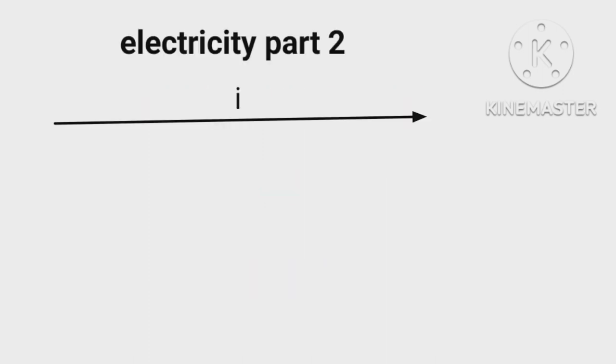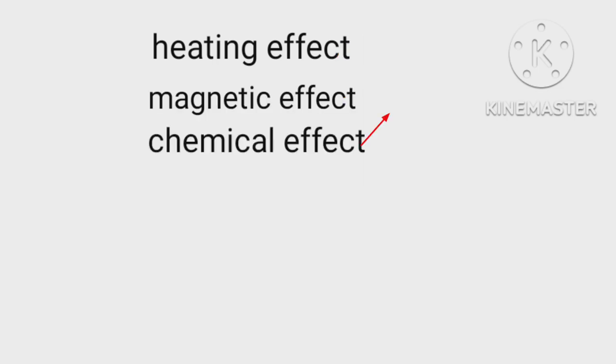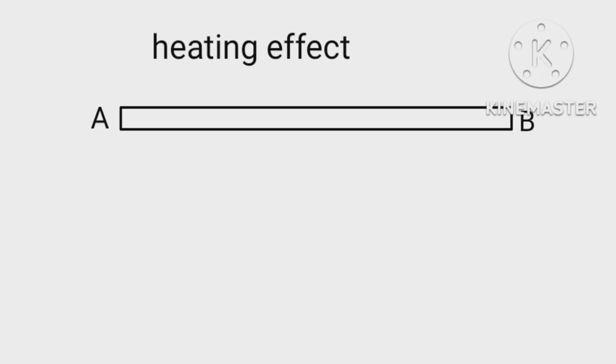When a current is allowed to pass through a conductor, three effects can be experienced. One is heating effect, second is magnetic effect, third is chemical effect. Here we take heating effect first. Let us consider a resistor A B having a potential difference V.